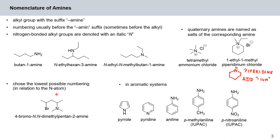When it comes to numbering, IUPAC convention is to choose the lowest possible numbering in relation to the nitrogen atom. For example, you could number a chain one, two, three, four, five, but we start in such a way as to have the lowest possible numbering in relation to the nitrogen atom — hence '4-bromo-N,N-dimethylpentan-2-amine'.